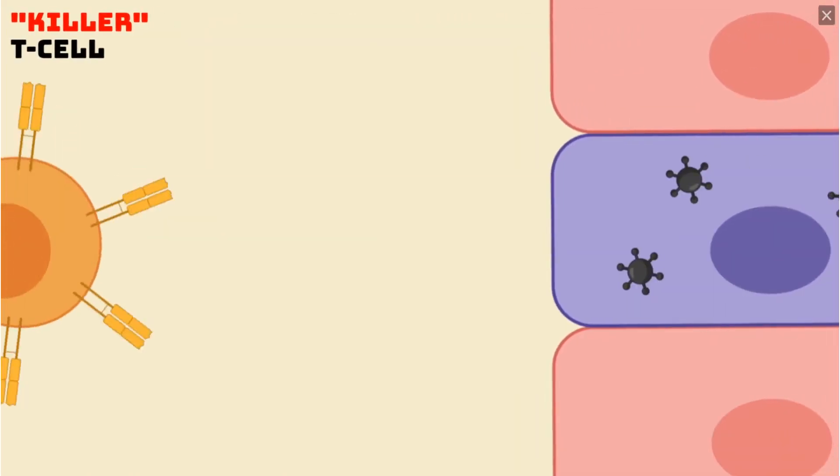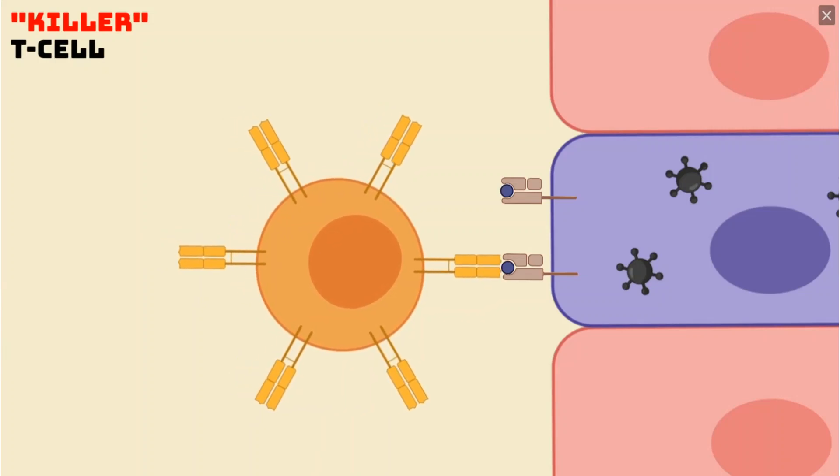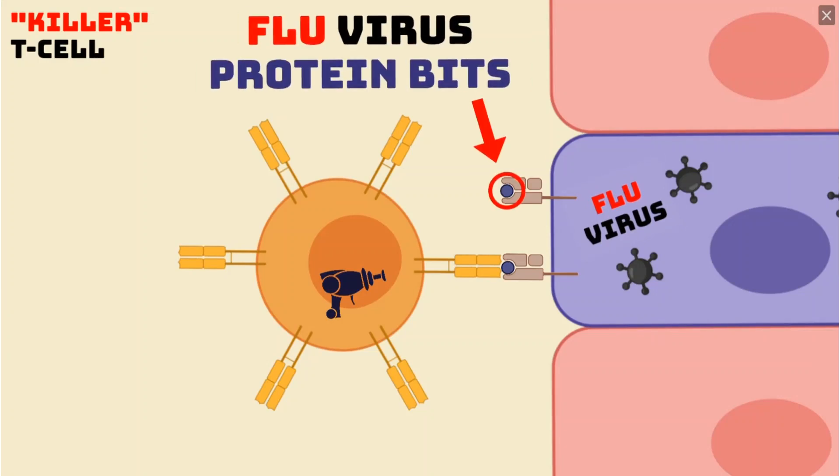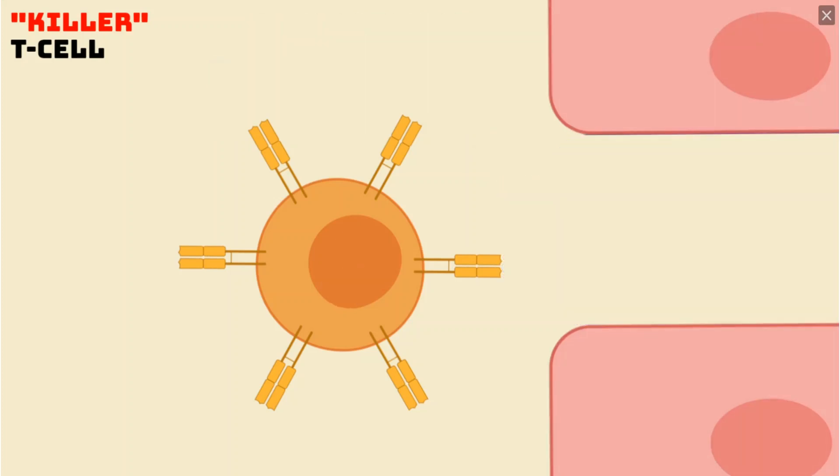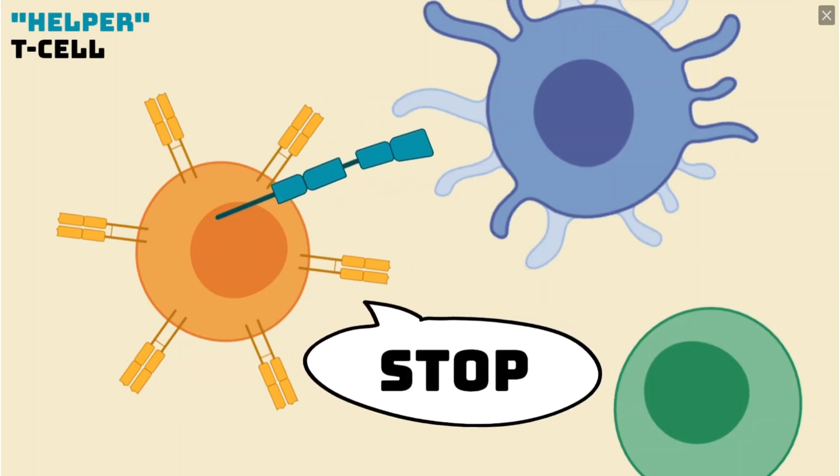Killer T cells will go out to the site where the pathogens are, finding cells presenting the antigen that it recognizes, and kill those cells. In Timmy's case, cells infected by the flu virus would present bits of viral proteins, and killer T cells would remove those virally infected cells along with the viruses within. Helper T cells will remain behind, interacting with other immune cells and regulating their functioning.